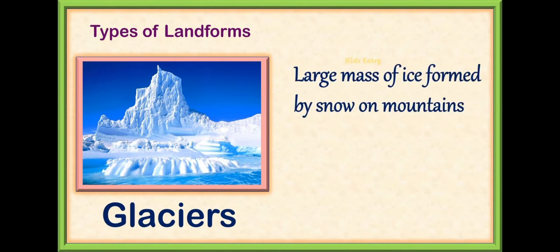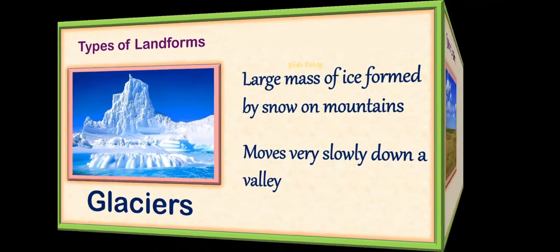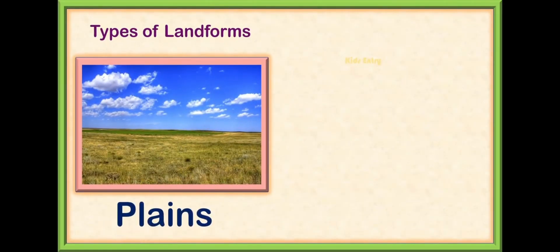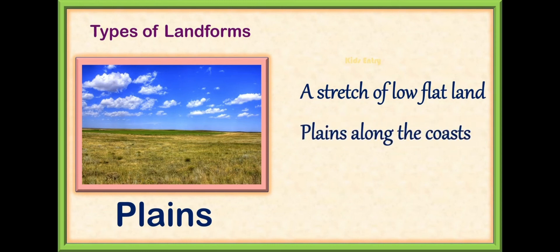The next one is glaciers — a large mass of ice formed by snow on mountains that moves very slowly down a valley. The next is plains, a stretch of flat land. Plains along the coasts are called coastal plains.